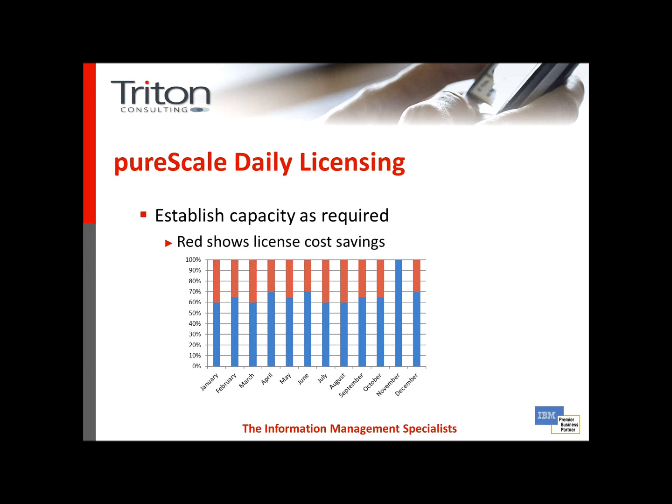What PureScale dynamic licensing allows you to do is to license down to a daily level the exact amount of capacity you want to make available. This means that across the course of the year, in this example, you might choose to license at the 70% level to cover your regular workloads, and then for November only, dial your license capacity up to 100%. As you can see from the red stripe in the graph, there is considerable saving to be made in terms of software licensing costs.